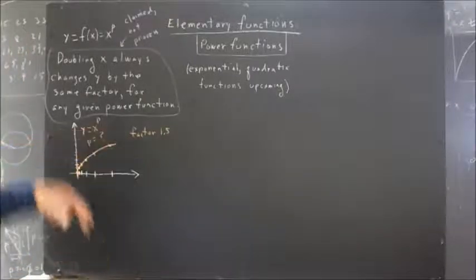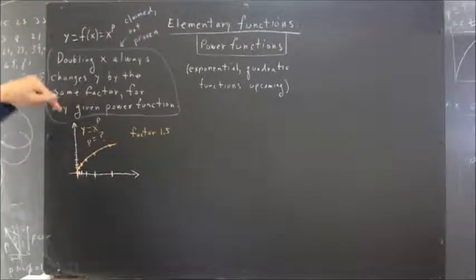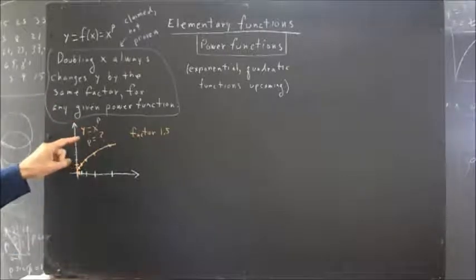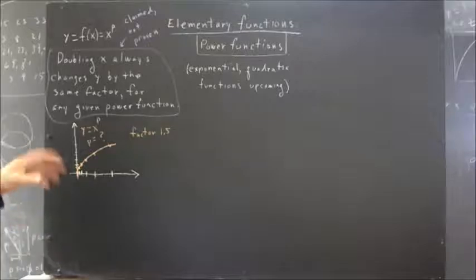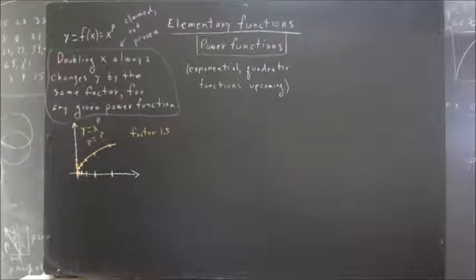Now, I've claimed in the first place that this makes the function a power function of the form y equals x to the p. As it turns out, it could be y equals some constant multiple of x to the p, but we won't worry about that for right now.